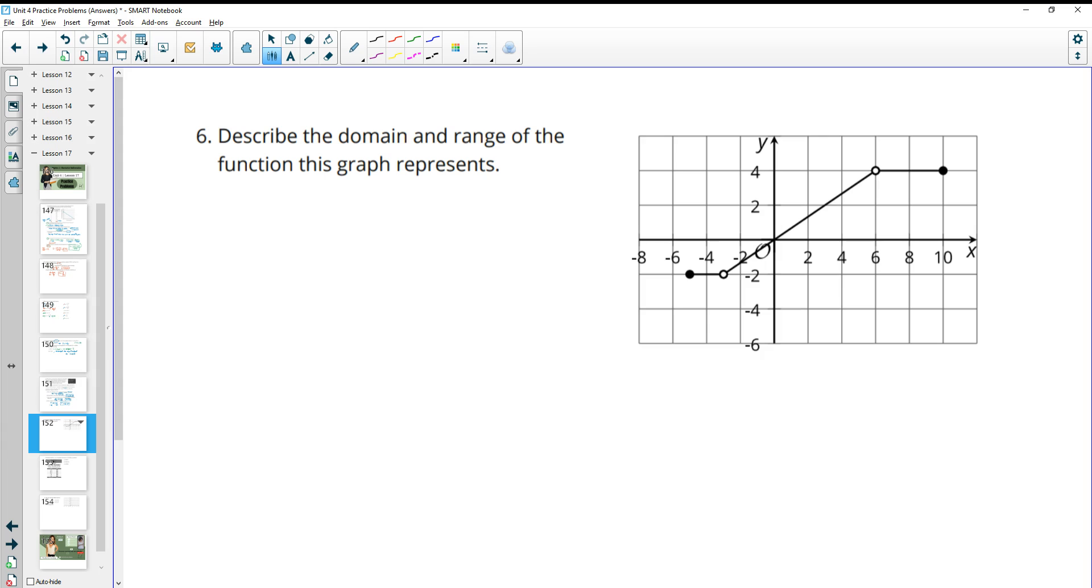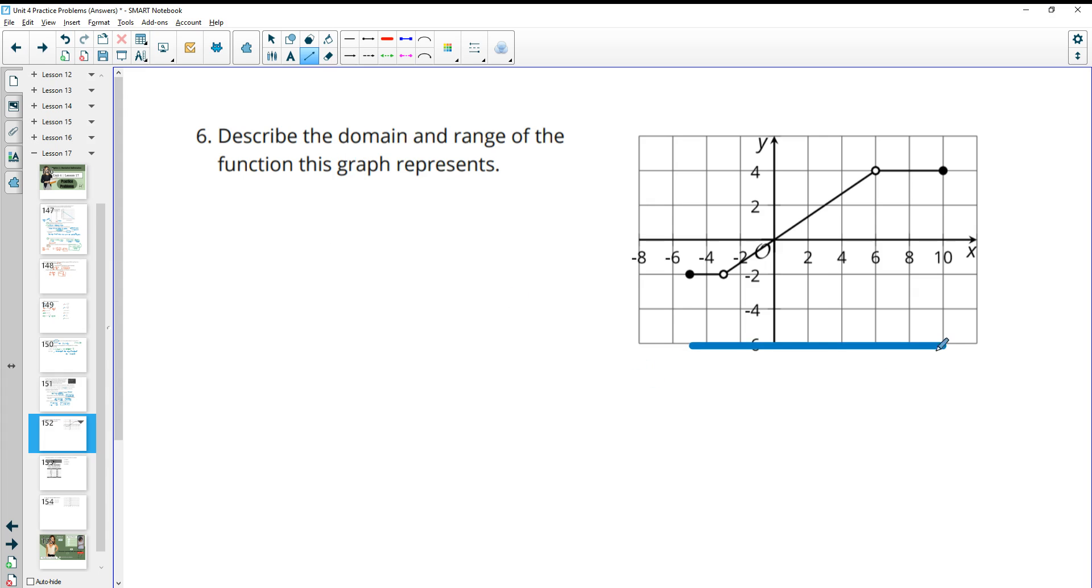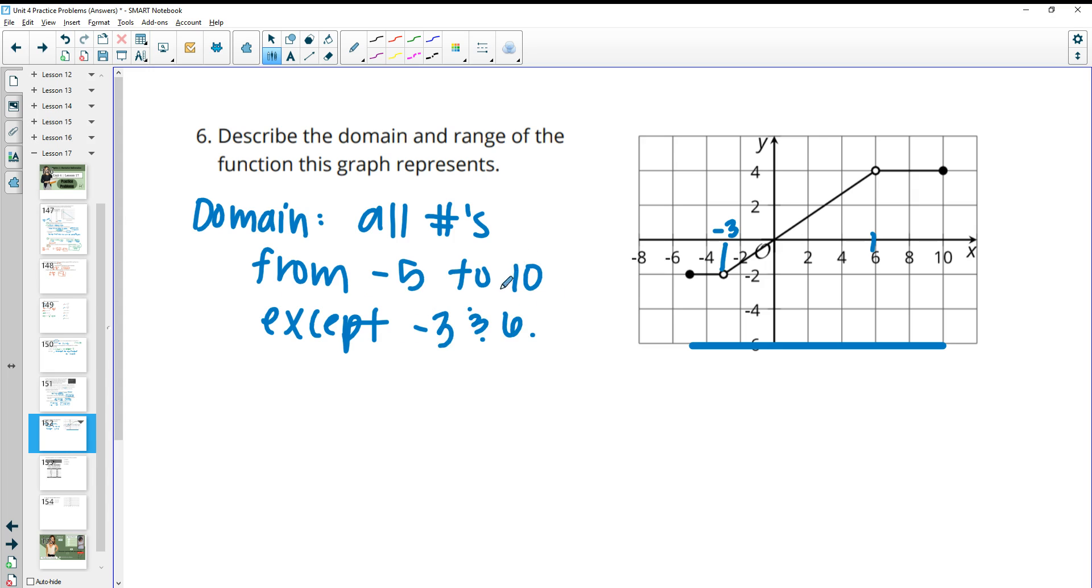Number six, describe the domain and the range of the function of the graph that this represents. So remember that the domain is our left and our right movement. It's all of our x values. So we're trying to look at what x values are present in this graph. And we see x values all the way from negative 5 up until 10 when we look at it left to right. And then it's connected. So our domain, it's continuous. So it's going to be all numbers, not just whole numbers, but all numbers from negative 5 to 10, except a couple. There's a couple that are missing because they have these open holes. So there's a couple spots here where the number is not a part of it. And so we need to remove these from it. So this is at negative 3 isn't part of it and at 6. So except negative 3 and 6. But every other number is part of the domain.